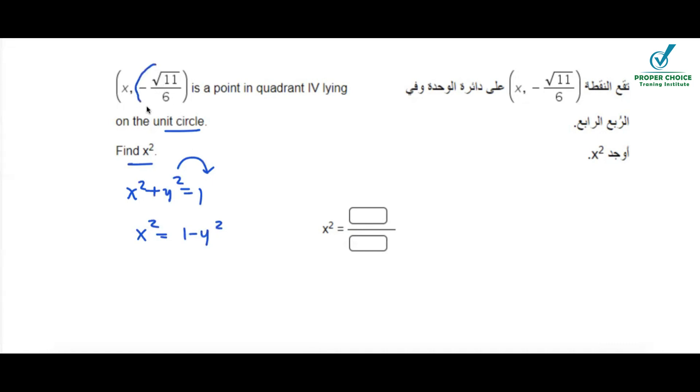Now what is the value of y? This entire thing is representing as y. Just substitute 1 minus negative square root of 11 by 6 square.